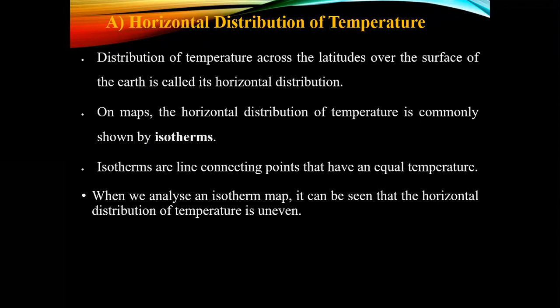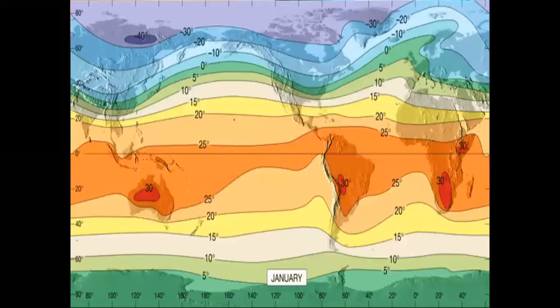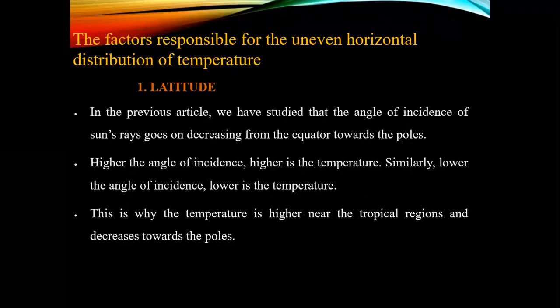The distribution of temperature across the surface of the Earth is called the Horizontal Distribution of Temperature. On maps, the Horizontal Distribution of Temperature is commonly shown by Isotherms. Isotherms are imaginary lines connecting points that have an equal temperature. When we analyze an Isotherm map, it can be seen that the Horizontal Distribution of Temperature is uneven.